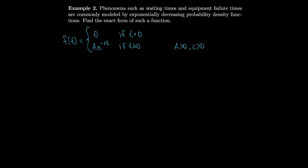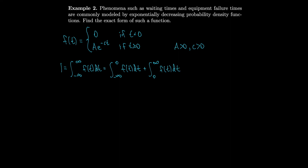Let's figure out the values of a and c. We know the integral of our probability density function must equal 1. So 1 equals the integral from minus infinity to infinity of f of t dt. Splitting the integral from minus infinity to 0 gives 0 since f is 0 for negative time, so we just need the integral from 0 to infinity of f of t dt, which equals 1.